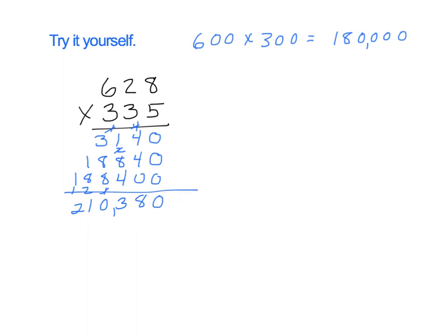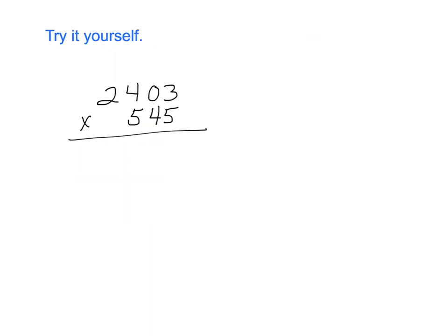Let's do another try-it-yourself. You're going to take it, do it on pencil and paper, pause it, and then play again to see if you did it correctly. The instructions are: first round to find the estimated product, then do the problem out. You can hit pause now, and when you're done, hit the play button again to check your work against mine.